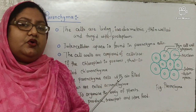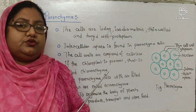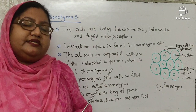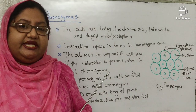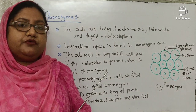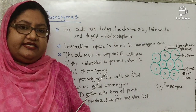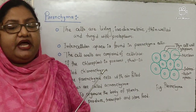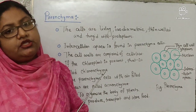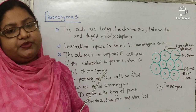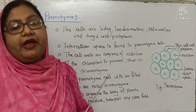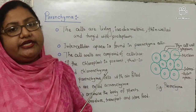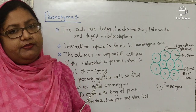Now, simple tissue. What is simple tissue? Simple tissue — the tissue which contains cells of the same size, shape and structure is called simple tissue. Simple tissue is of three types: parenchyma, collenchyma and sclerenchyma.